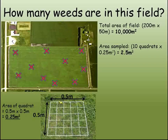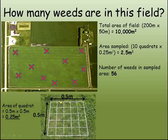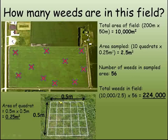Once the sample points have been chosen, you would use a quadrat, which is a wire grid that is 0.25 metres squared in area. By counting the number of weeds in this small area and adding all of the samples together, you can then multiply up to calculate roughly how many weeds there would be in the whole field.